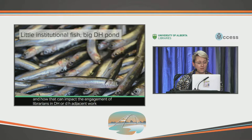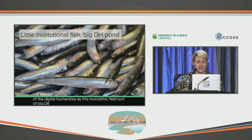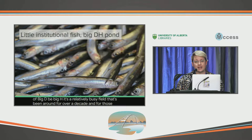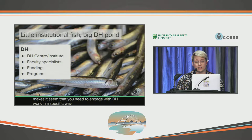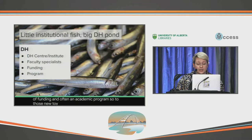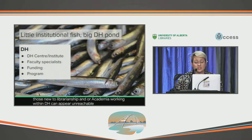Little institutional fish, big DH pond. We often conceive of the digital humanities as this monolithic field — sort of big D, big H. It's a relatively buzzy field that's been around for over a decade, and the literature really makes it seem that you need to engage with DH work in a specific way: your institution needs to have a DH center, an institute, faculty specialists, a great deal of funding, and often an academic program. So to those new to librarianship and academia, working within DH can appear unreachable, especially to those not located at a major research institution with this kind of infrastructure.